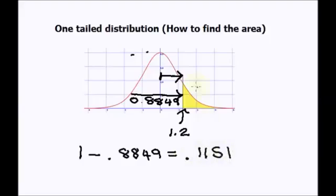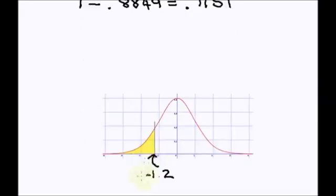Now what happens if I have a left tail instead of a right tail? Say my value is at negative 1.2 instead of positive 1.2. The normal curve is symmetrical. So this value here is going to be exactly the same as the value for 1.2 I looked up earlier.